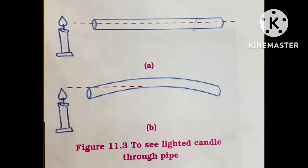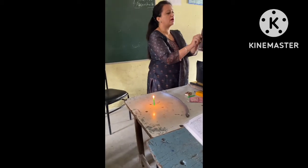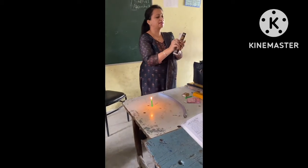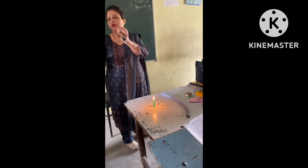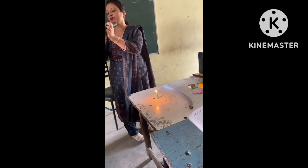Hello students, how are you? Today we are going to perform a new activity to show that light travels in a straight line. For this purpose, as shown in the diagram, we need a piece of pipe which is bent, a candle, and a matchstick. Let us start.